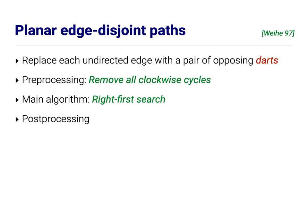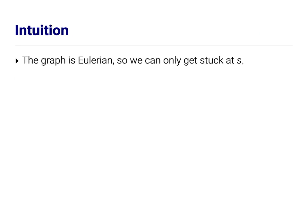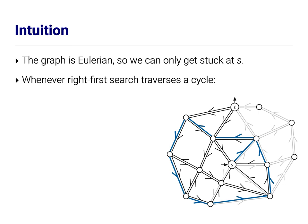So I want to provide a little bit of intuition about why this algorithm works. So the first thing to observe is that when we took the graph, the undirected graph, and replaced every edge with two opposing darts, we created an Eulerian graph. Every node has the same number of incoming darts as it has outgoing darts. Similarly, when we removed all the clockwise cycles, we reversed darts along a bunch of cycles in the graph. So the same number of incoming darts at any vertex were reversed as outgoing darts from that vertex. So the graph is still Eulerian. And that means the right-hand rule part of the algorithm can never get stuck anywhere except at S. If I walk into a vertex, there's always a way to walk out.